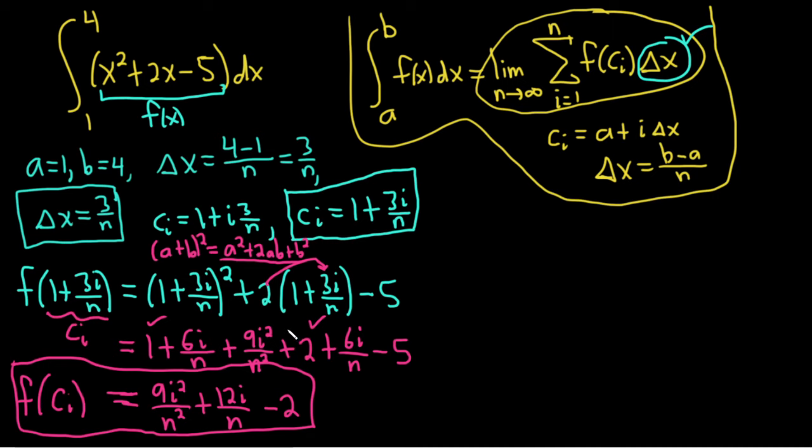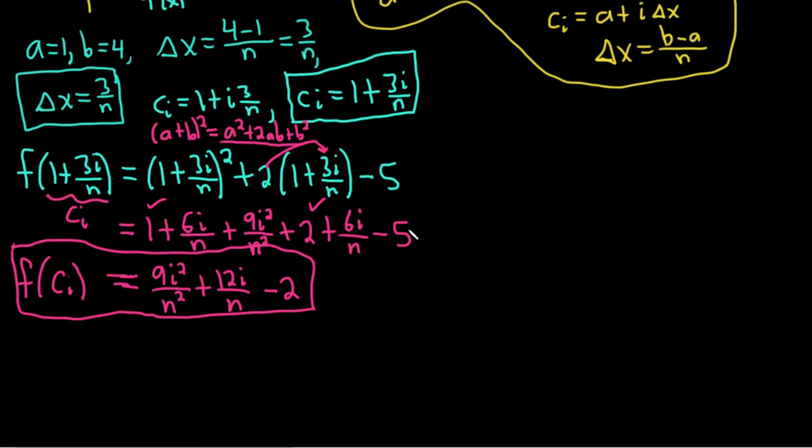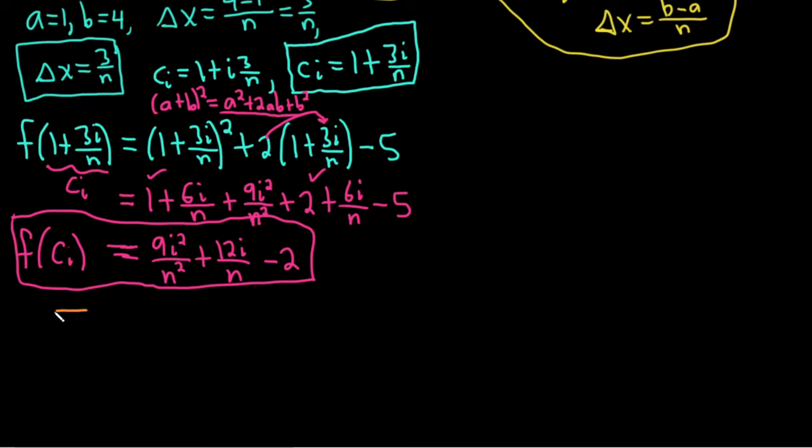So now you see we have everything we need in these nice little boxes. We've got Δx, we've got c_i, we've got f(c_i). So now we can start filling it in. So I'm going to go ahead and write this piece now. I'm going to wait to the very end to write the limit. And the reason is, once you write the limit sign, you have to keep writing that limit sign in every step until you actually take the limit.